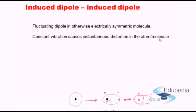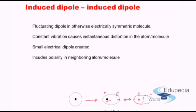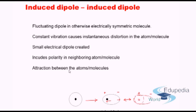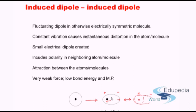The constant vibration causes instantaneous distortion in the atom or molecule, as shown. This results in a small electric dipole being created, and this small dipole induces polarity in the adjacent atoms or molecules. Similarly, this induced dipole will affect its adjacent atoms and molecules, hence a whole chain of induced dipoles is created, causing different atoms to attract each other. The induced polarity in the atoms is quite weak, because it arises just from the asymmetry in the distribution of electrons with respect to the nucleus.